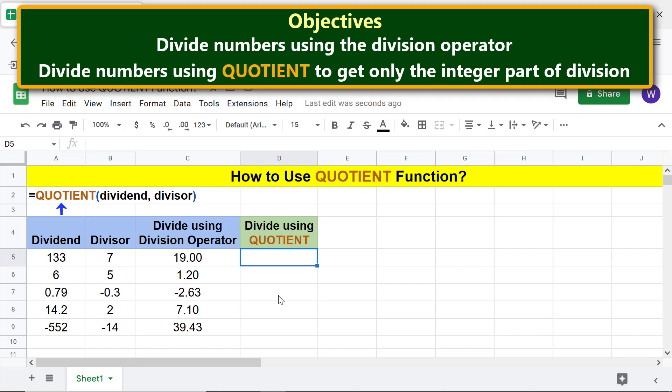First, type the equal to symbol, type QUO, and select quotient. For dividend, click this cell. Type comma. For divisor, click this cell. Press Enter. Click the tick mark to auto-fill these cells with the formula.